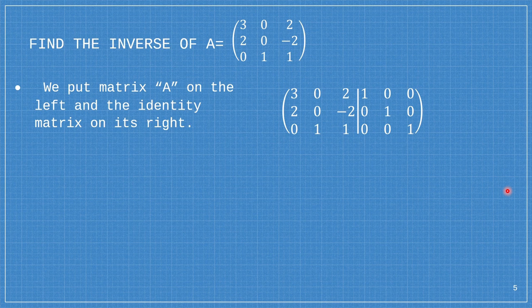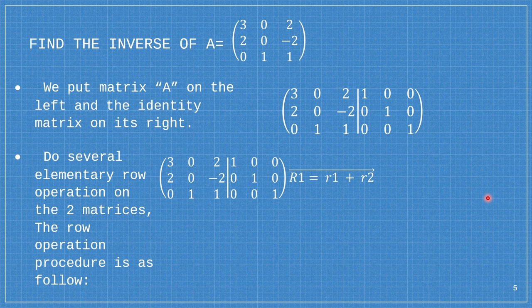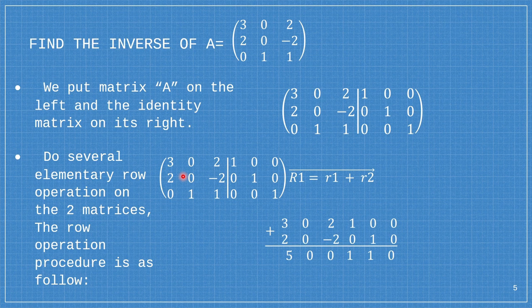In this case, I'm going to add row 1 and row 2. So this is row 1 and this is row 2. 3 plus 2 is 5, 0 plus 0 is 0, 2 plus negative 2 is 0, 1 plus 0 is 1, 0 plus 1 is 1, and 0 plus 0 is 0. Now we're going to replace the previous row 1 by this, and that gives us this.